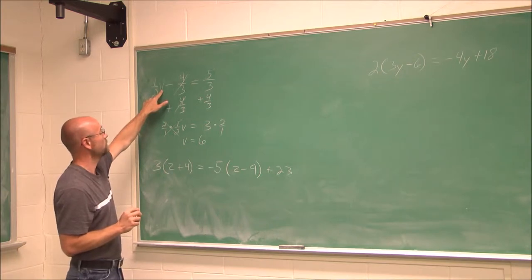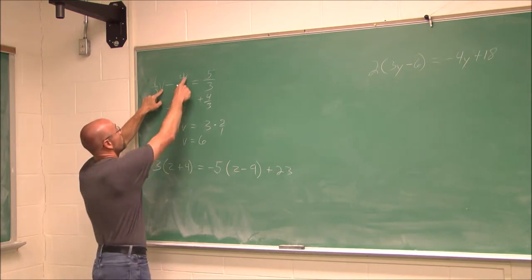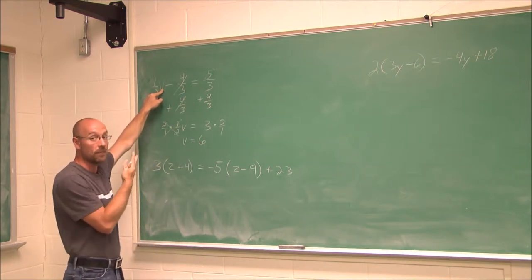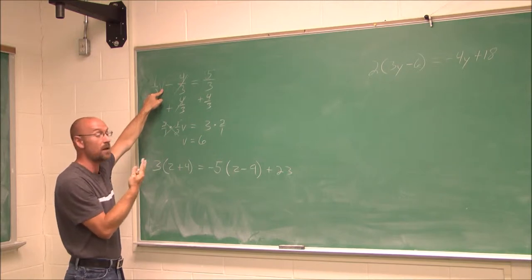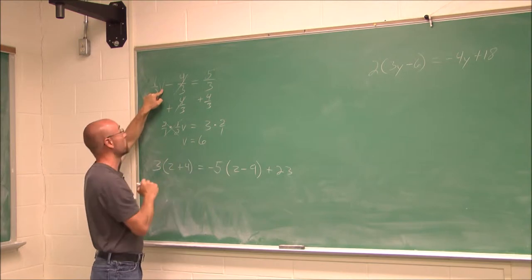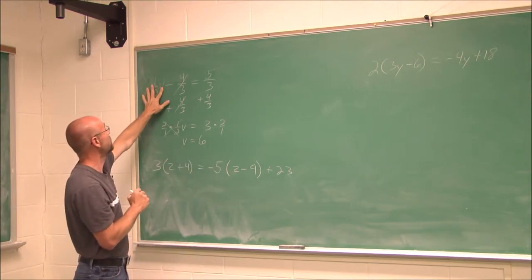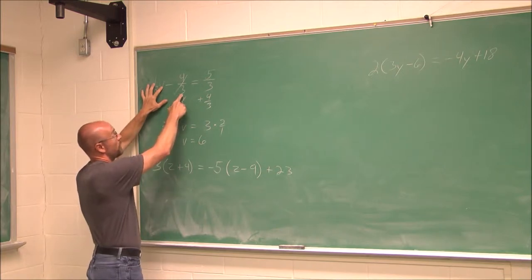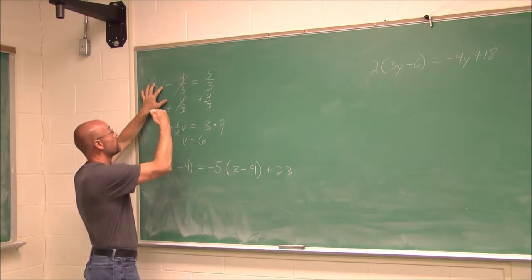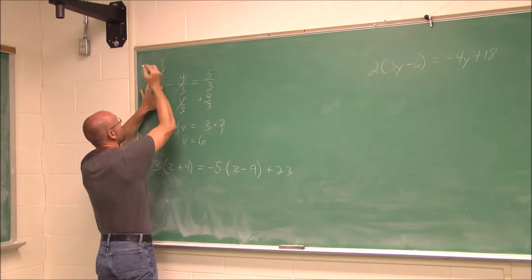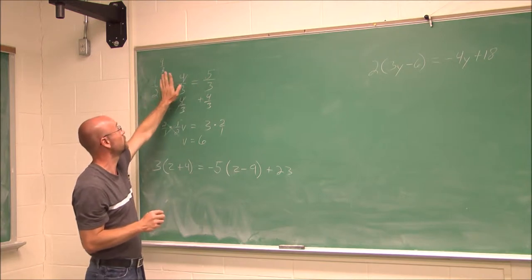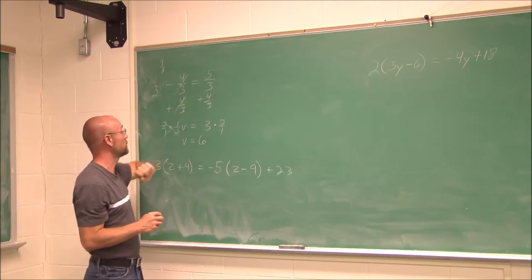Half of 6 is 3. 3 minus 4 thirds equals 5 thirds. I'd have to have a common denominator — sometimes checking your work can be more time consuming than finding the solution, but it's a good thing to do. 3 is the same as 9 thirds. 9 thirds minus 4 thirds is 5 thirds. 9 minus 4 is 5 over 3. So it does work.